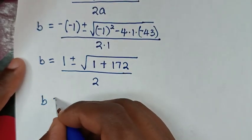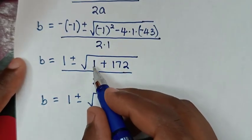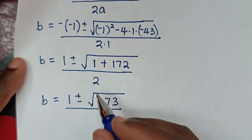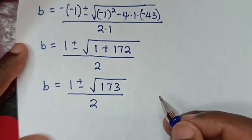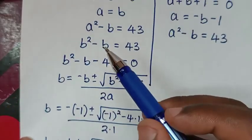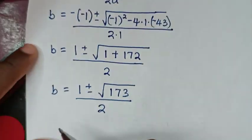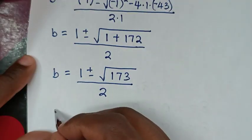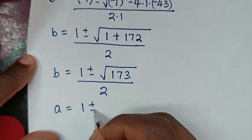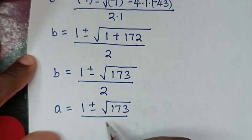This gives b equals (1 plus or minus square root of 173) over 2. Since a equals b in this first solution, we also have a equals (1 plus or minus square root of 173) over 2.